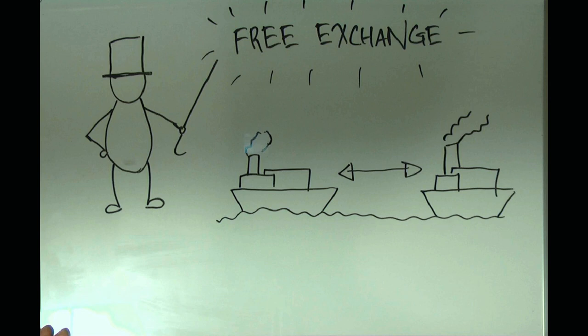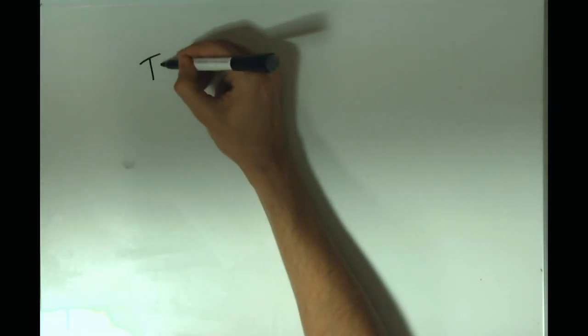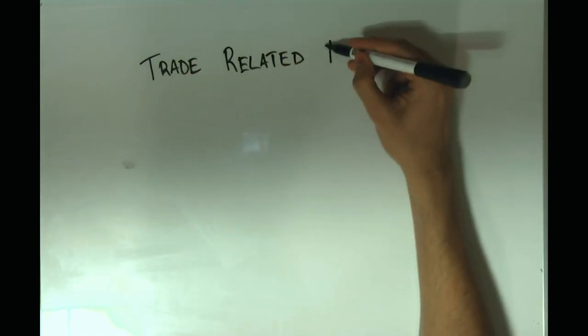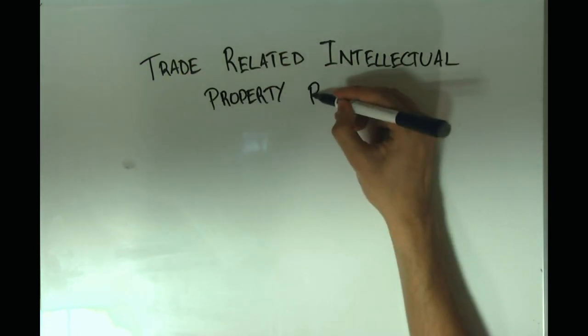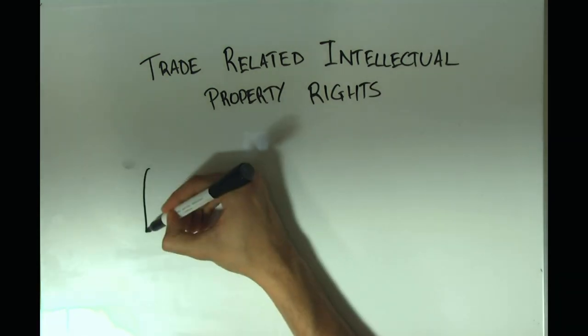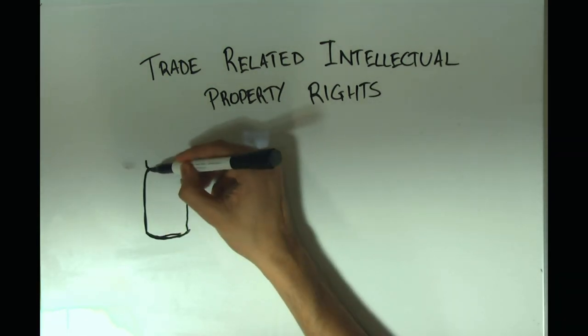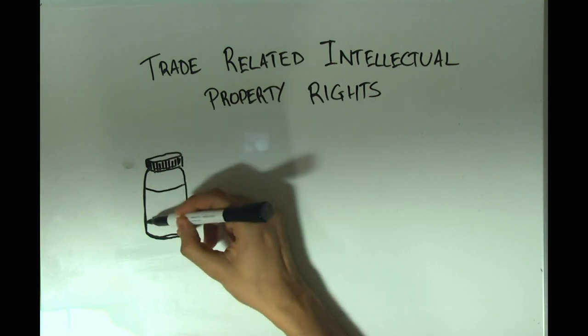Economist Danny Rodrik recently presented a breakdown of what modern trade agreements really entail. He categorized four major aspects of trade agreements and looked at their potentially harmful effects. The first of these is TRIPS, or Trade-Related Intellectual Property Rights. These rights are a protection for innovation, making sure that those who have developed new concepts or technologies are fairly compensated for their contribution.